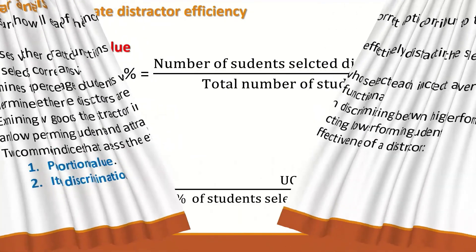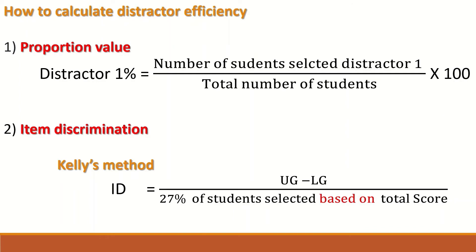To calculate the distractor efficiency using two possible tests: the first is the proportion value, in which the distractor percentage is calculated by counting the number of students who selected that distractor divided by the total number of students, multiplied by 100. The second is the item discrimination following Kelly's method: ID equals upper group minus lower group, divided by 27% of the students selected based on their total score.